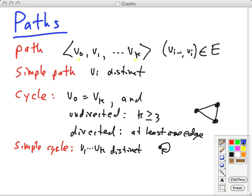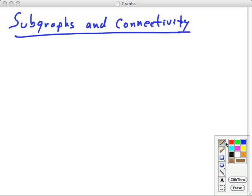And a couple more important terms here. An acyclic graph has no cycles. And a directed acyclic graph is often called a DAG, for directed acyclic graph. Now, let's look at subgraphs and connectivity. Let's define subgraph.